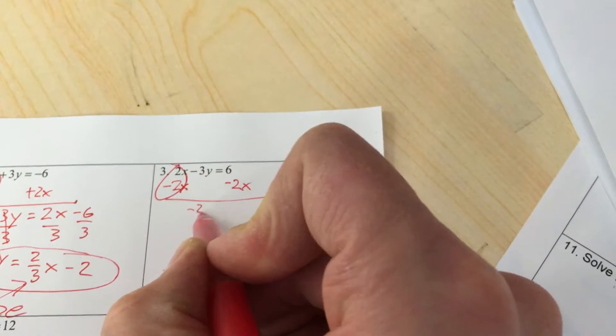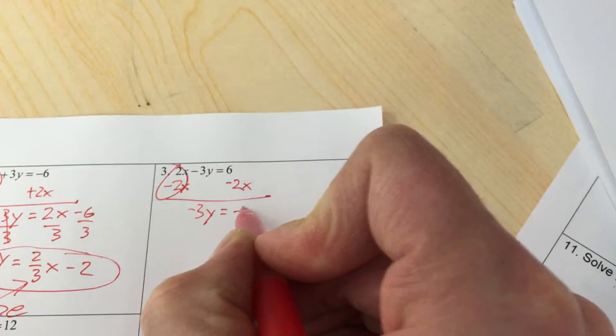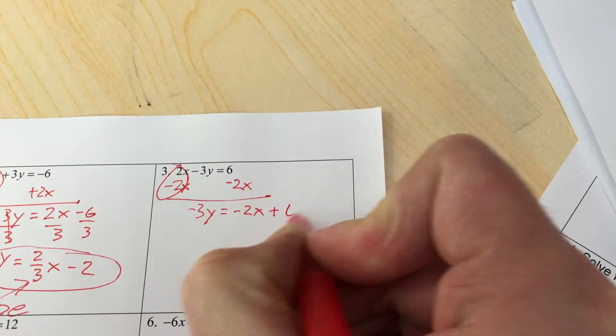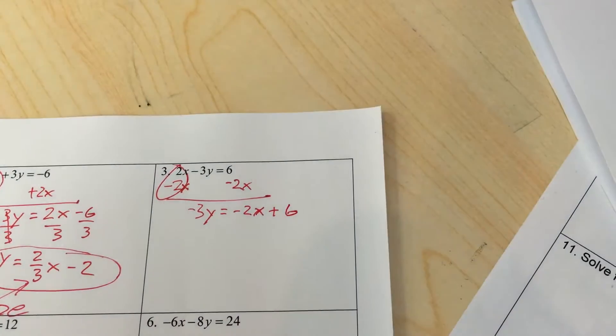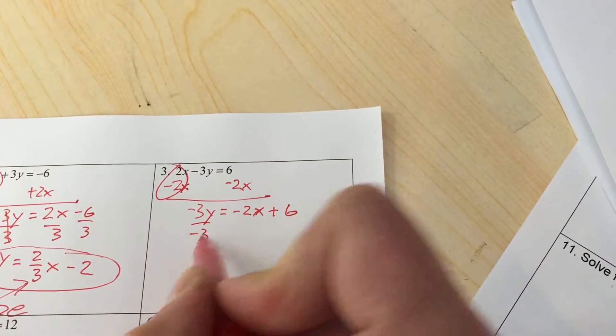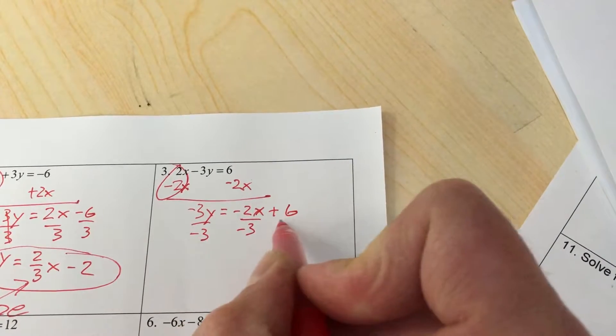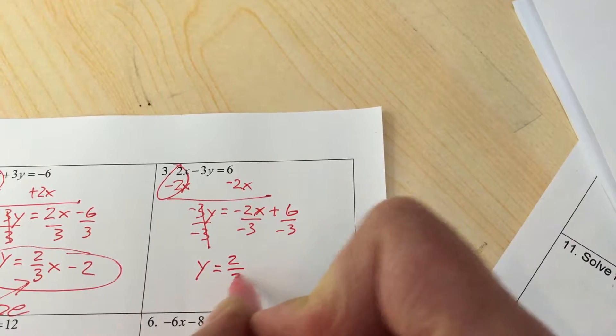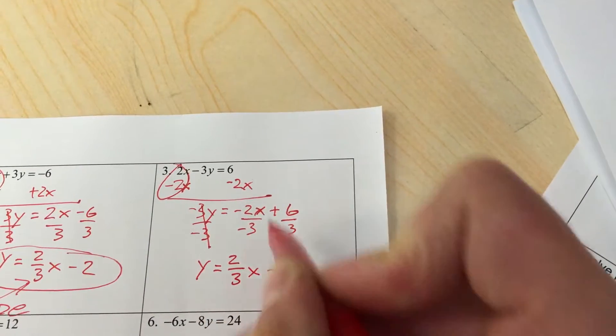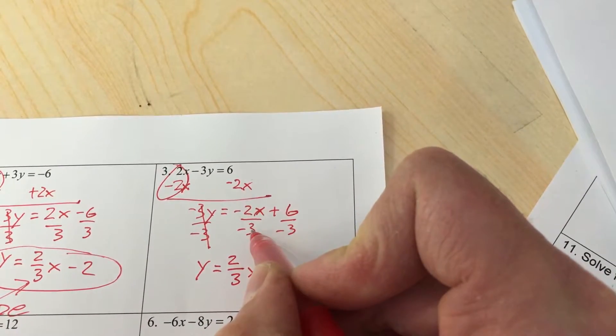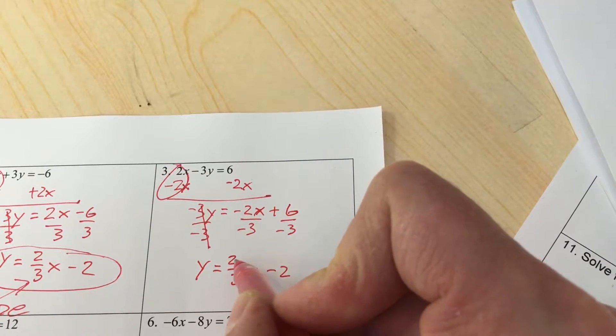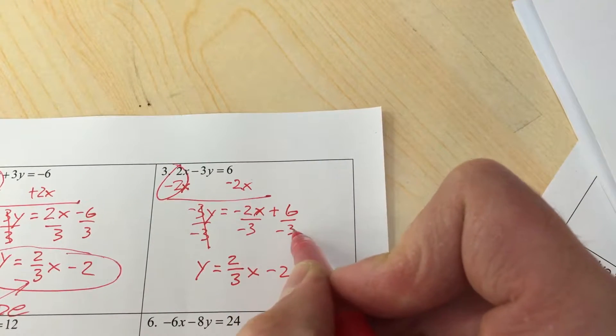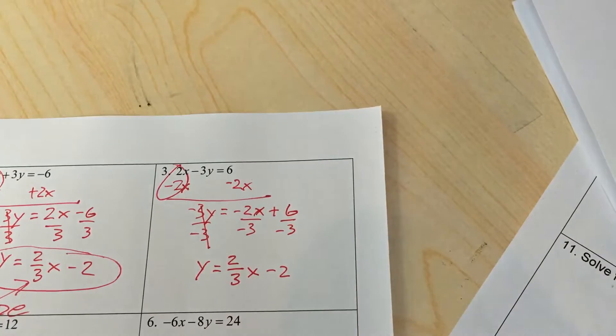We've got -3y equals -2x plus 6. Divide by -3, and you have y equals 2/3 x minus 2. This -2 and -3 became a positive, so it's positive 2/3, and 6 divided by -3 is -2.